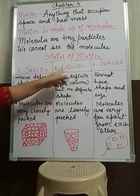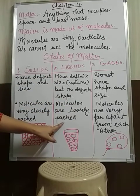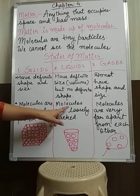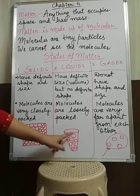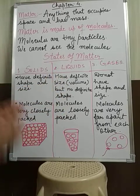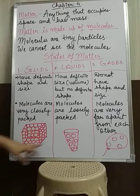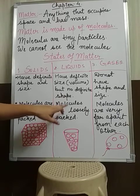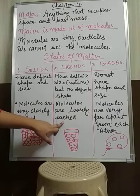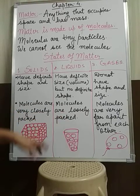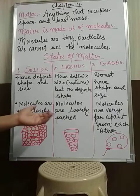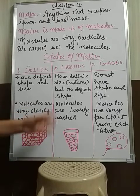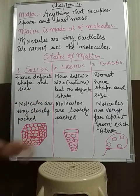The molecules in liquids are loosely packed. The intermolecular spaces in liquids are more compared to solids. That's why they can change their shape — because the molecules are loosely packed, they can take the shape of the beaker or container in which they have been poured.